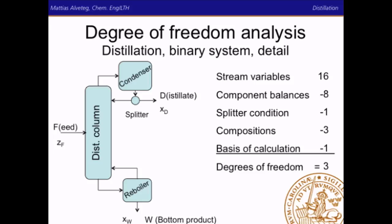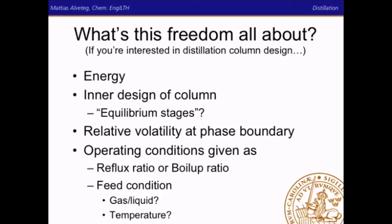So what is this freedom all about if you're interested in distillation column design? We haven't said anything about energy use, or about how efficient the column design is. Later we will introduce equilibrium stages to describe the efficiency of the system. We also haven't said anything about relative volatility — how easy it is to separate substance A from substance B — and we haven't given any operating conditions. Operating conditions can be given as reflux ratio, boil-up ratio, and feed conditions, which include whether the feed is gas, liquid, or at what temperature.